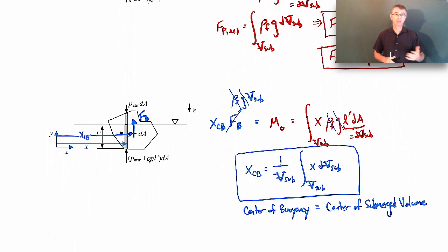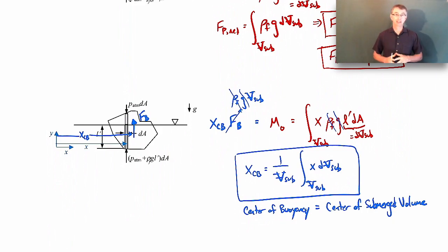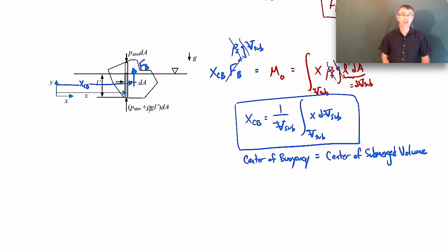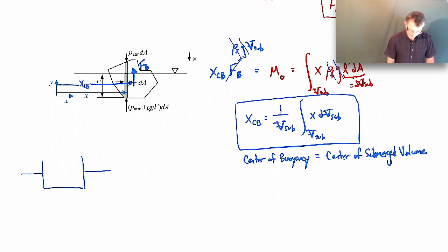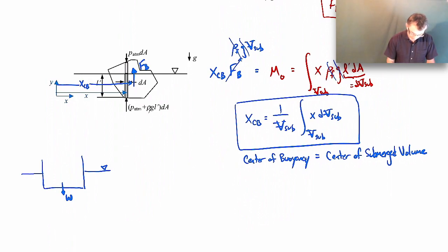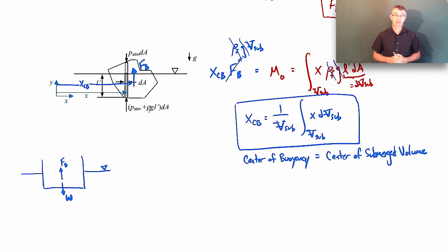Now we know how to find a buoyant force and where it acts. Let me connect this back to the Vasa from the beginning of the lecture — this comes down to the idea of buoyant stability. Let's say we have a ship that's rectangular in cross-section sitting in the water, and the center of gravity is down low. The buoyant force acts at the center of submerged volume, which might be higher. So the center of mass or center of gravity is below the center of buoyancy.